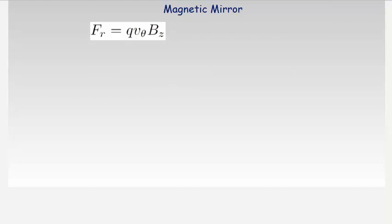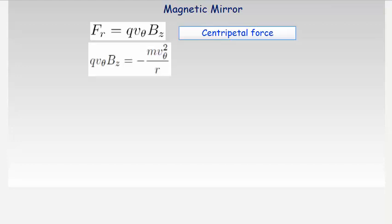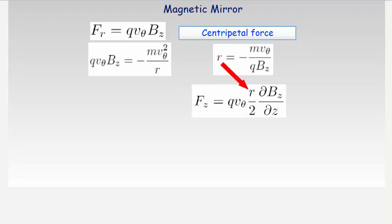We also note that the radial force for this system is actually the centripetal force, so we equate the radial force Fr to the expression for the centripetal force minus mvθ² on r. The minus sign indicates that the radial force points inwards. Rearranging this equation to make r the subject, we then substitute it into the equation for Fz to obtain this equation, which gives the dependence on the z-component of the magnetic field and the corresponding gradient. There is also a kinetic energy term of a half mv².